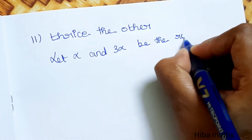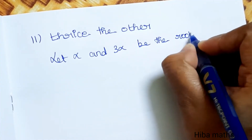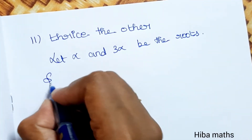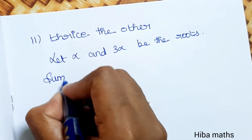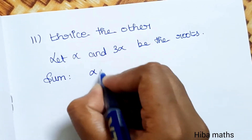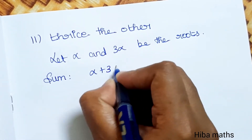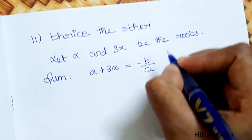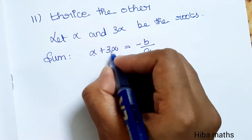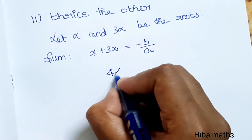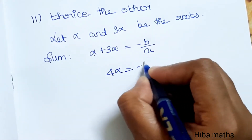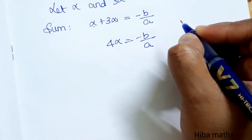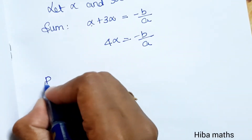Sub-case 2: One root is thrice the other. Let the roots be α and 3α. Sum of roots: α + 3α = -B/A, so 4α = -B/A.